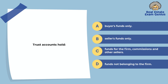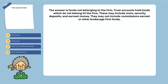Trust accounts hold: buyers' funds only, sellers' funds only, funds for the firm commissions and other sellers, or funds not belonging to the firm. The answer is funds not belonging to the firm. Trust accounts hold funds that do not belong to the firm. These may include rent, security deposits, and earnest money. They may not include commissions earned or other brokerage firm funds.